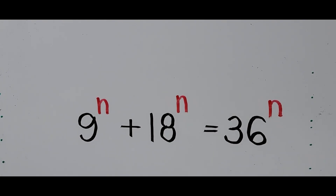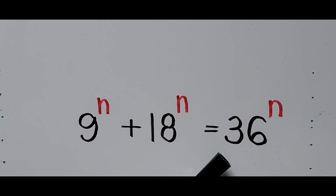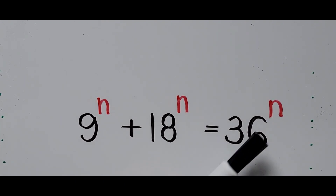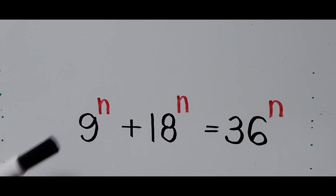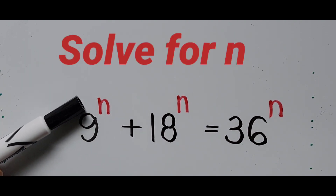Hello everyone, we have a given exponential equation on the board: 9 to the power of n plus 18 to the power of n equals 36 to the power of n, and we're going to solve for the value of exponent n.